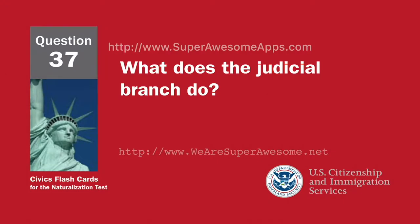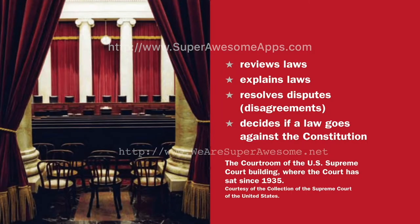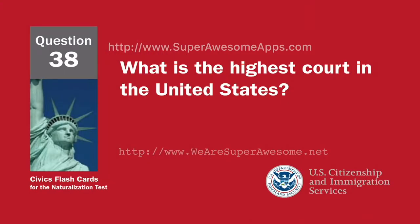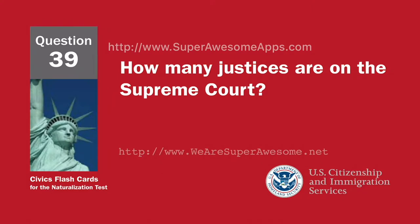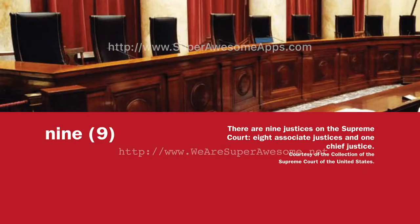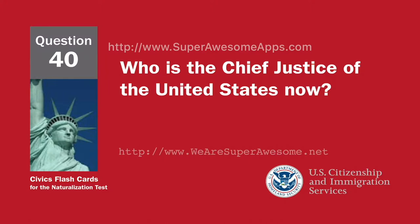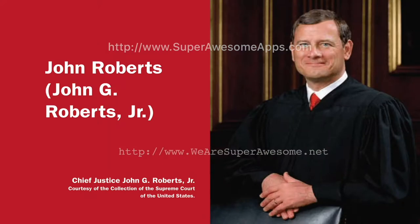What does the judicial branch do? Reviews laws. Explains laws. Resolves disputes and disagreements. Decides if a law goes against the Constitution. What is the highest court in the United States? The Supreme Court. How many justices are on the Supreme Court? Nine. Who is the chief justice of the United States now? John G. Roberts, Jr.